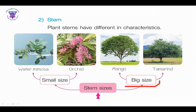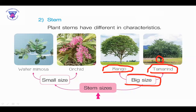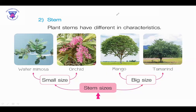Next, we have the big size. In the big size, the examples are mango tree and the tamarind tree. They have a very big size of STEM. On the other hand, water mimosa and orchid have a very small size of STEM. Now let's go to the next page.